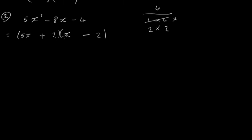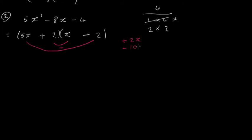Checking: 5x times x gives 5x²; plus 2 times minus 2 gives minus 4. For the middle term: plus 2 times x is plus 2x, 5x times minus 2 is minus 10x — adding gives minus 8x, which matches. So the factorization is (5x + 2)(x − 2).